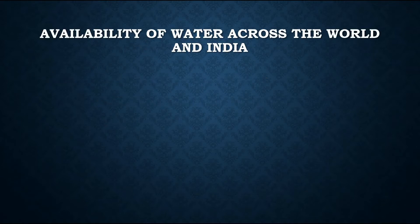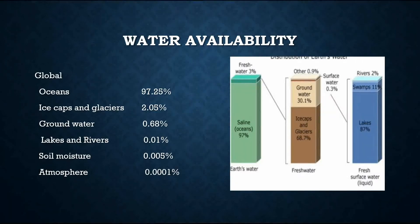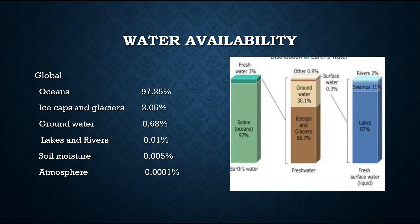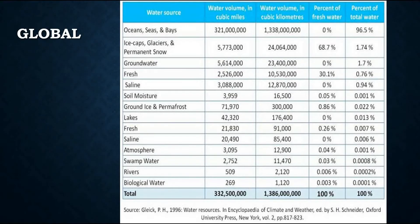The availability of water across the globe in percentage: Oceans 97.25%, Ice caps and glaciers 2.05%, Groundwater 0.68%, Lakes and rivers 0.01%, Soil moisture 0.005%, Atmosphere 0.0001%. These are the complete details of availability of water across the world.